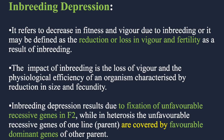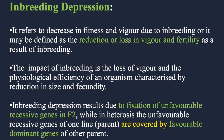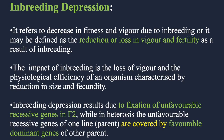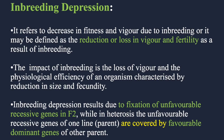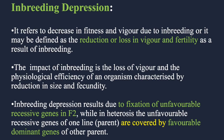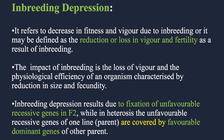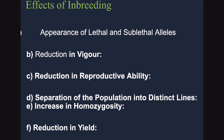Although inbreeding is advantageous, it is also lethal in its own way. The main impact of inbreeding is the loss of vigor, and the physiological efficiency of the organism is also decreased. Inbreeding results due to the fixation of unfavorable recessive genes in the F2 generation, whereas in heterosis, the unfavorable recessive genes of one line are covered by favorable dominant genes of the other parent. This is why cross-pollination is always superior to self-pollination — even if a defective recessive gene is present, it is covered by the dominant gene.